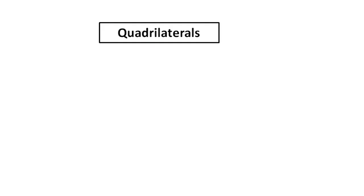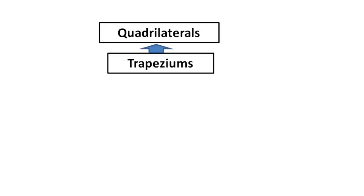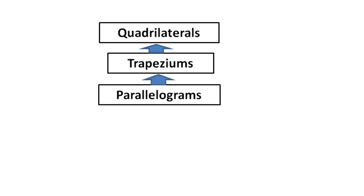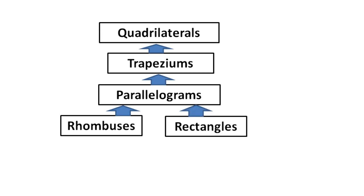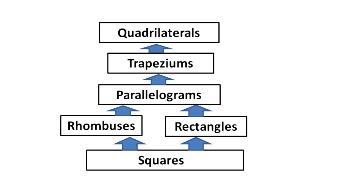Let us look at this family as a tree. We have quadrilaterals; all trapeziums are quadrilaterals; all parallelograms are trapeziums; all rhombuses are parallelograms; all rectangles are parallelograms. Squares can be seen as rhombuses or rectangles with some special properties.